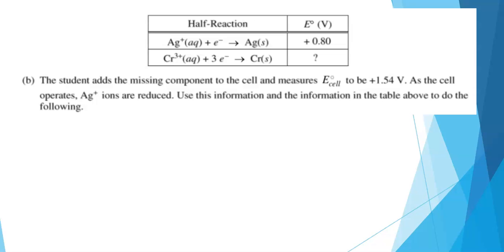I'm seeing a table with some half reactions and E° values. The student adds the missing component to the cell, so we've got a salt bridge now, and the cell voltage is measured to be +1.54 V. As the cell operates, Ag+ ions are reduced. Use this information and the information in the table to calculate the value of E° for the half reaction for the reduction of Cr³⁺ ions to chromium metal.